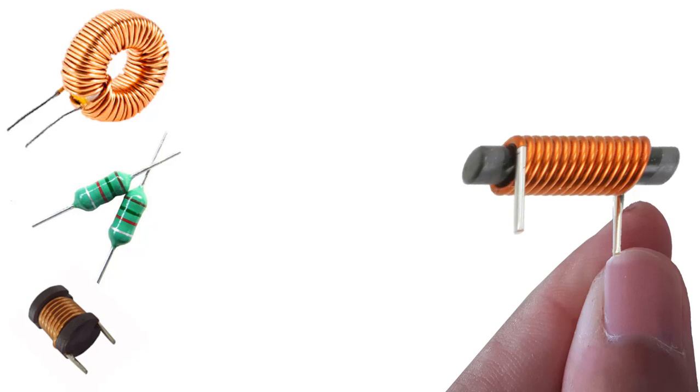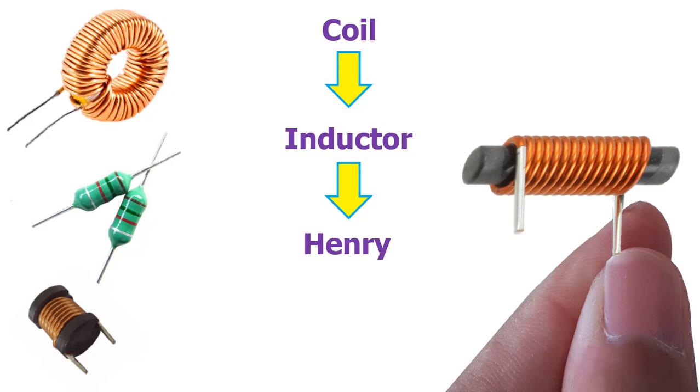Hello friends, in this lesson, I will explain the structure and working principle of the coils, which is one of the basic circuit devices of electricity and electronics. Coil is also called an inductor. A unit of the coil is Henry and is denoted by the letter L.